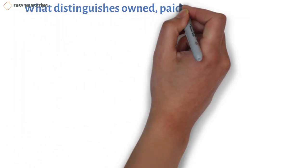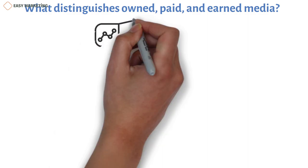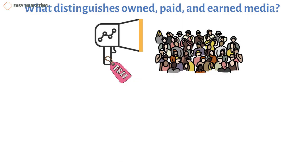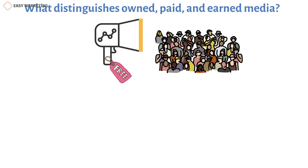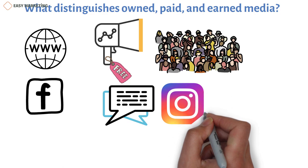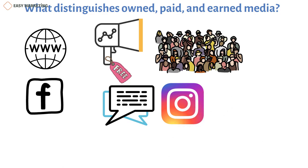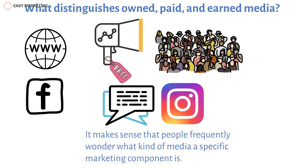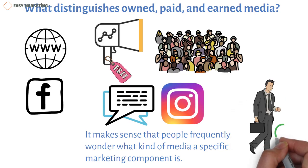What distinguishes owned, paid, and earned media? Owned and earned media are free, whereas paid media is content you pay to promote in front of an audience as an advertisement or sponsorship. Owned media is the kind of content you produce and manage, such as on your website or Facebook page, whereas earned media is the kind of content that other people produce about you, such as reviews or Instagram posts. Because marketers have a variety of alternatives with certain things, like social media, it's not always evident. Let's clear up a few typical misunderstandings.